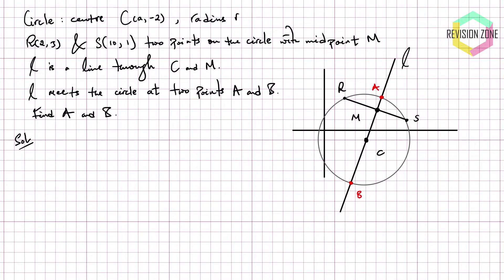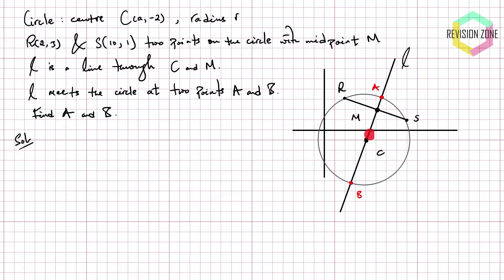So what's our approach going to be in solving this problem? We're going to have to figure out the equation of the line L, and we're going to have to figure out the equation of the circle. Once we have those two equations, we can solve them simultaneously to figure out solutions which are going to give us the exact coordinates for points A and B. It's probably easier to start with trying to find the equation of line L. Before we go straight into that, we need to make sure we've extracted all the information from this diagram that we actually can, and that is circle theorems.